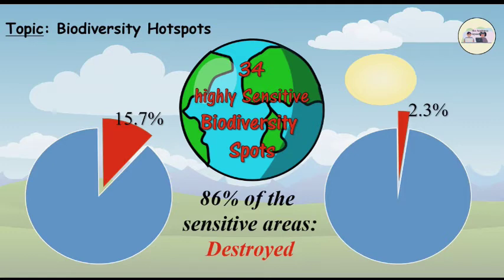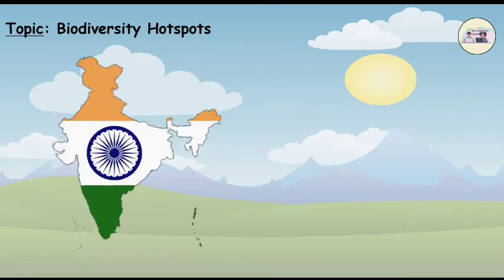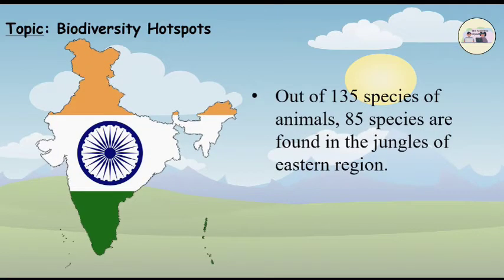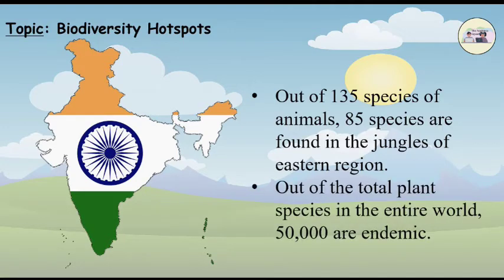As far as India is concerned, out of 135 species of animals, 85 species are found in the jungles of the eastern region. Out of the total plant species in the entire world, 50,000 are endemic.